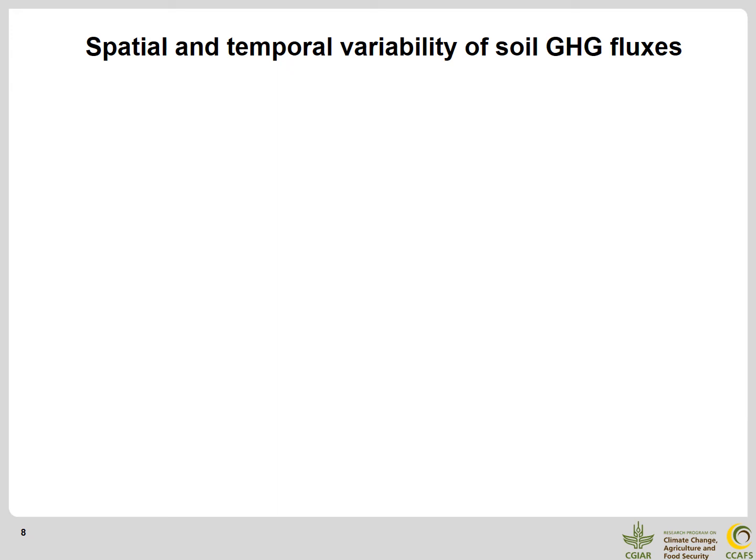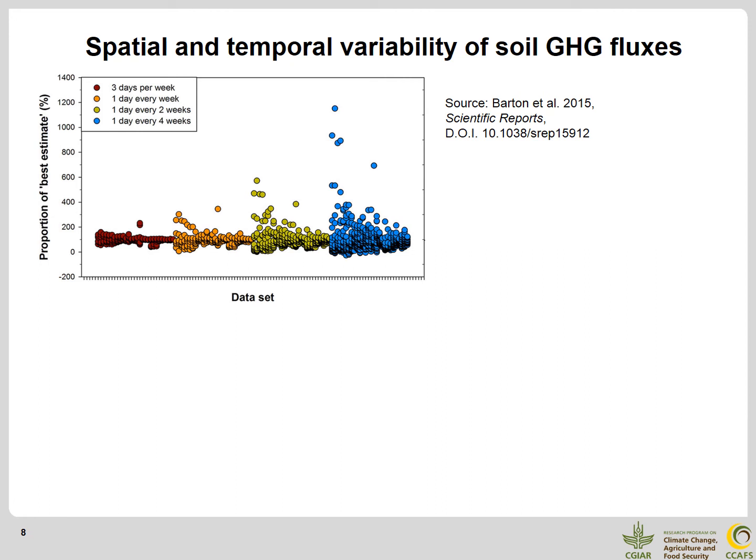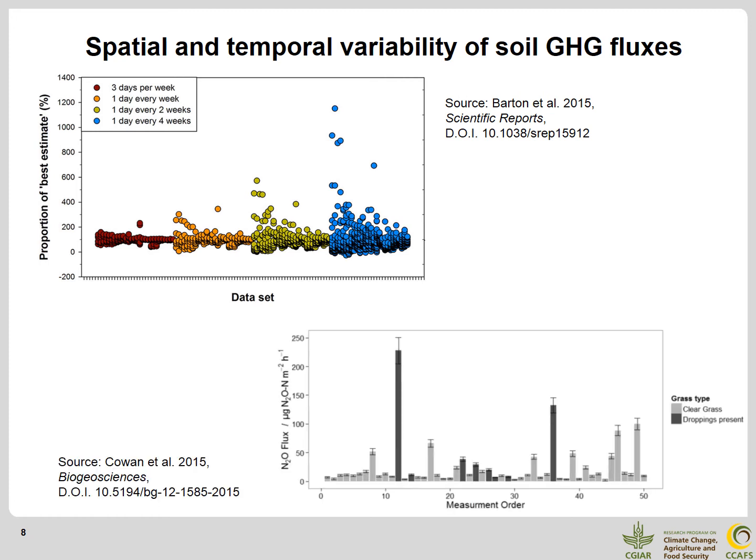Variability of greenhouse gas fluxes, both spatial and temporal, is a major challenge for obtaining robust estimates at the plot and landscape level. It has been shown that sampling more than once a week is still necessary to obtain annual N2O fluxes within 10% of daily estimates. Greenhouse gas fluxes are also known to fluctuate greatly spatially due to heterogeneous soil conditions, with instantaneous fluxes potentially varying by several orders of magnitude within a few dozen meters.